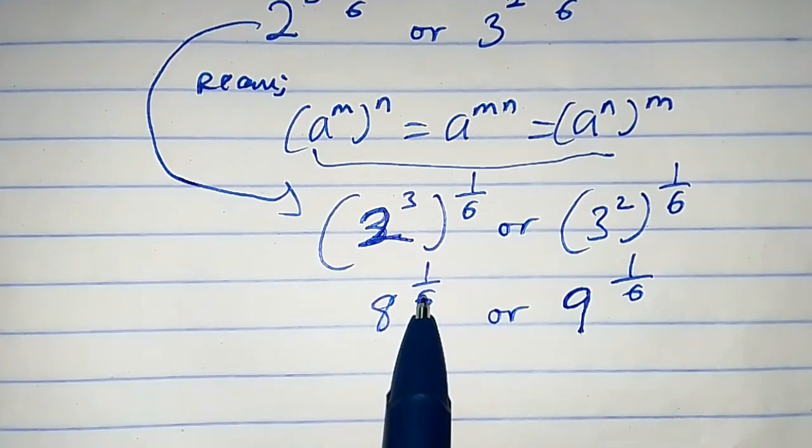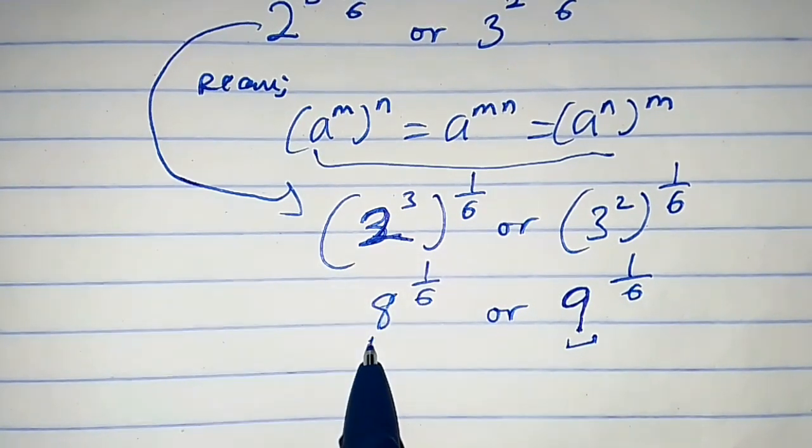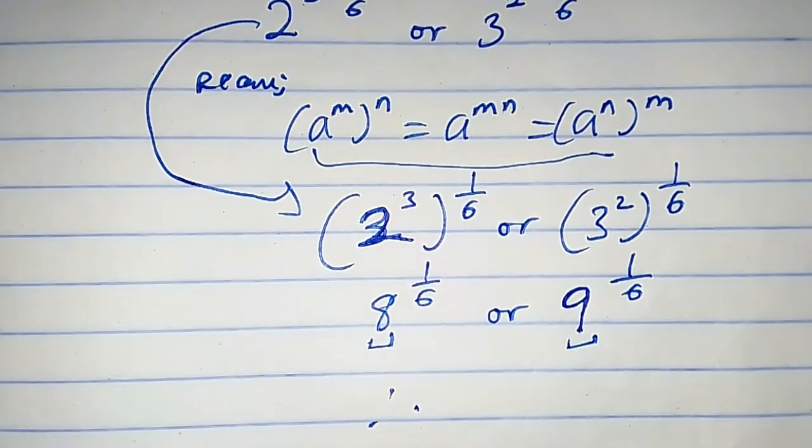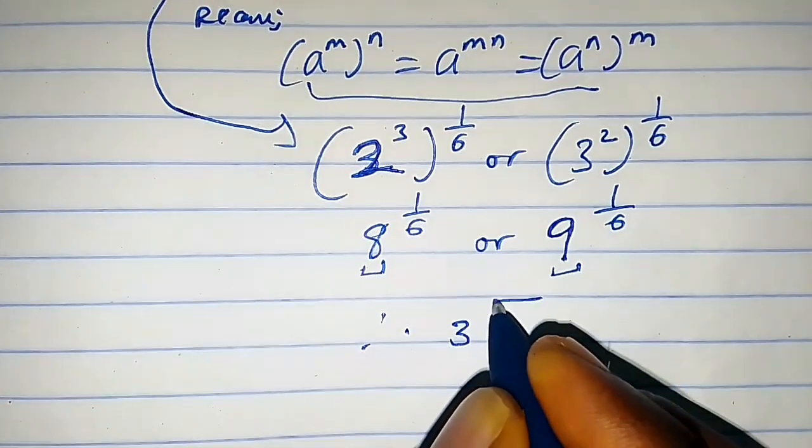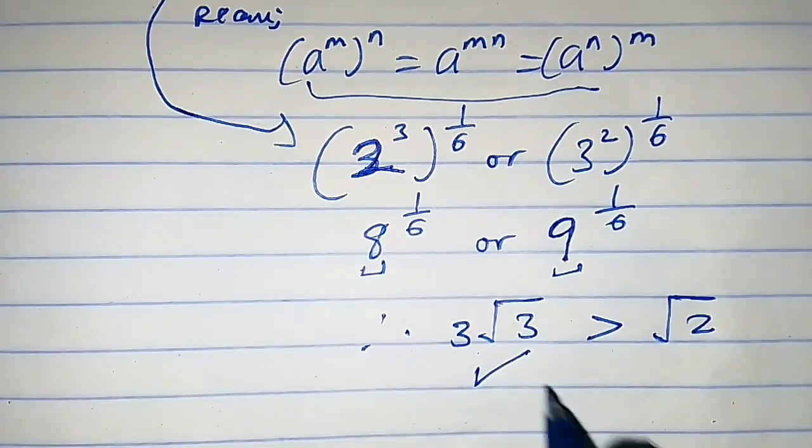You observe that the power is the same, so let's consider the base. This base is indeed greater than this. Therefore, cube root of 3 is greater than square root of 2. So this is the larger number.